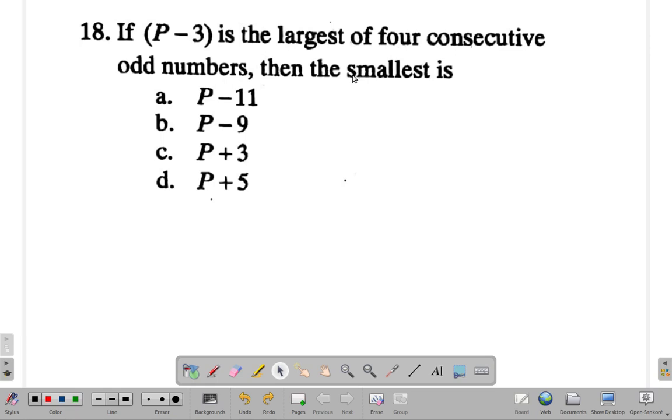Odd numbers, as you know, are like 1, 3, 5, 7, 9, 11, 13, and so on and so forth. Those are odd numbers.